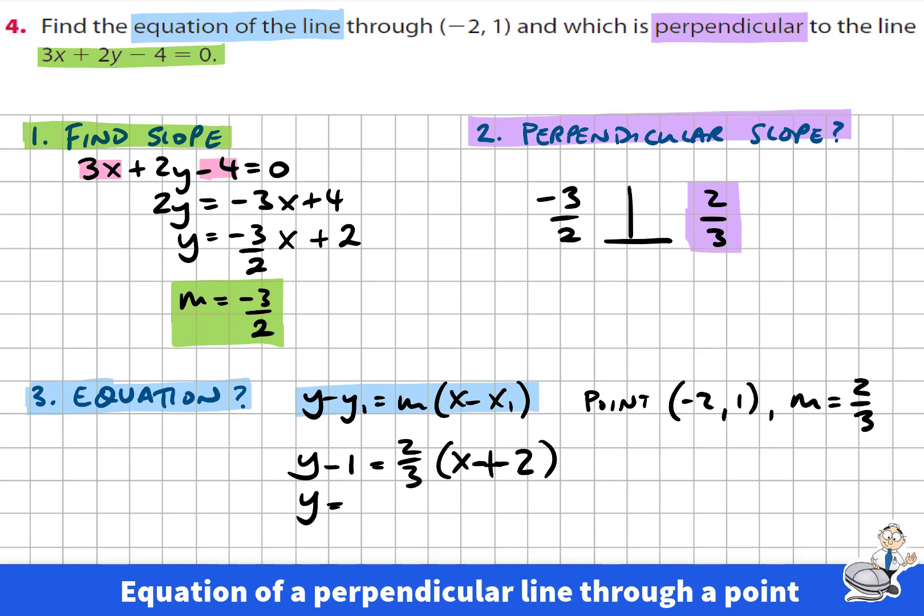I'm just going to multiply by the 2 thirds on the right hand side. Just to give me a bit of space here. So if that's true, it follows that y minus 1 is equal to 2 over 3 times x. And when I multiply 2 over 3 by 2, I'm getting plus 4 over 3.